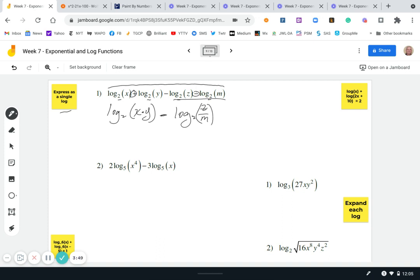So that's our quotient rule, but we're not done yet. We can simplify this even further by using this subtraction and doing another quotient rule. So we can say our final answer is log base two of x times y divided by z over m. That's going to equal log base two of x times y times m over z. And that is our final answer.